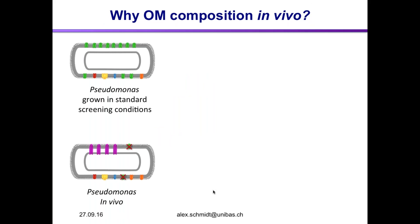Then we have the application to Pseudomonas samples. This is a huge consortium project called 'New Drugs for Bad Bugs.' The basic principle is well known — at some point antibiotics will reach a limit and no longer be useful in the future, so there is a strong need to develop new antibiotics. This is a really large project involving 18 academic groups, big pharma companies, and biotech companies. One working package is the proteomics part.